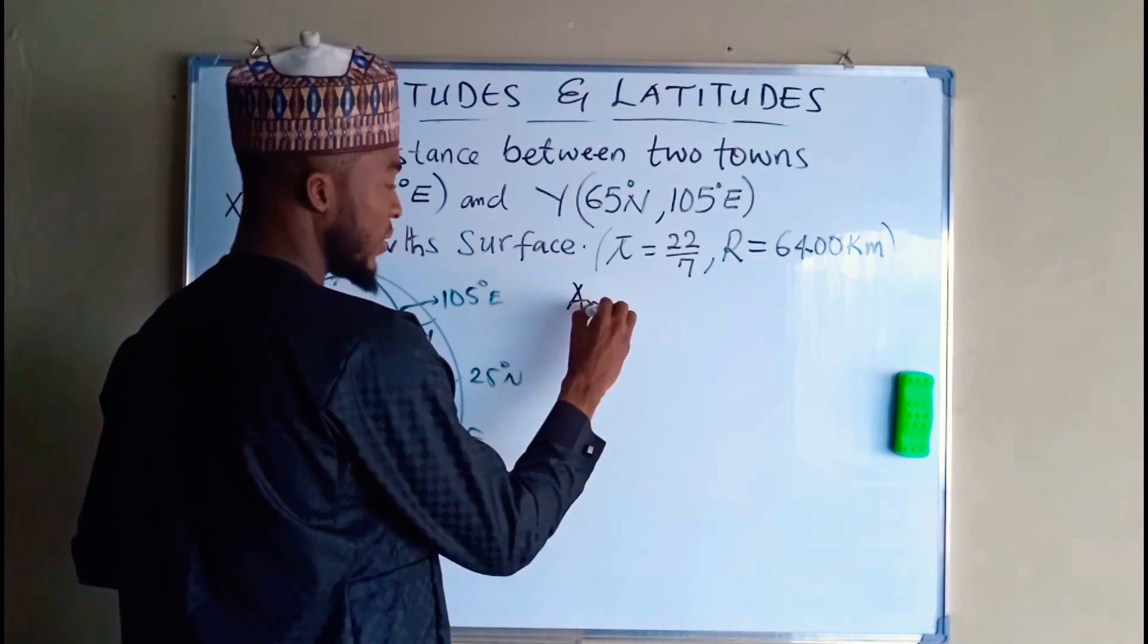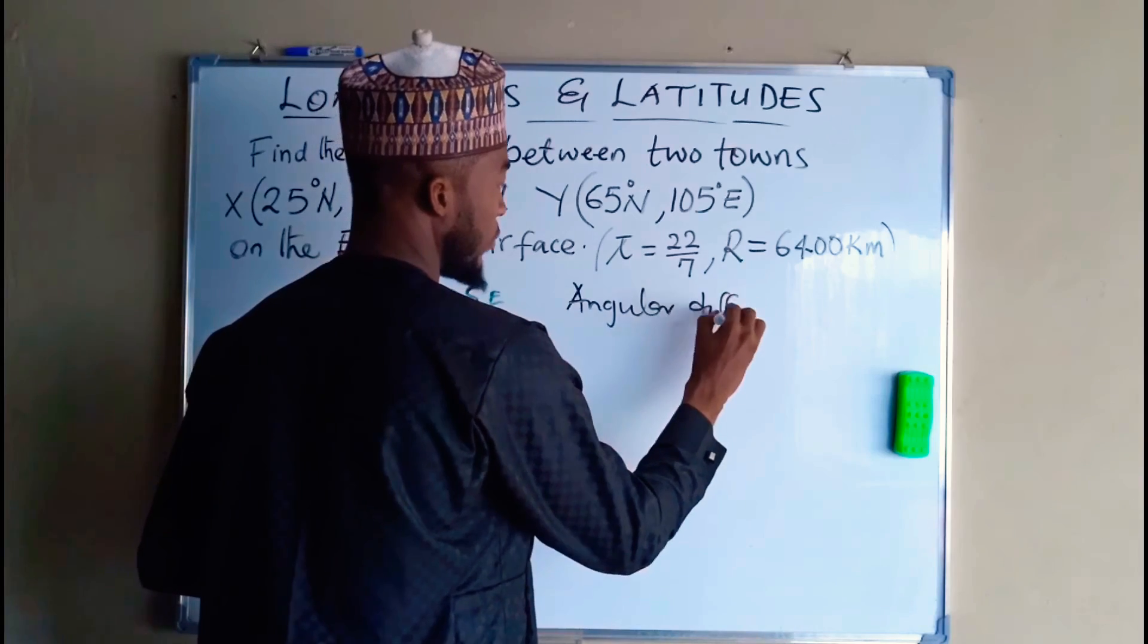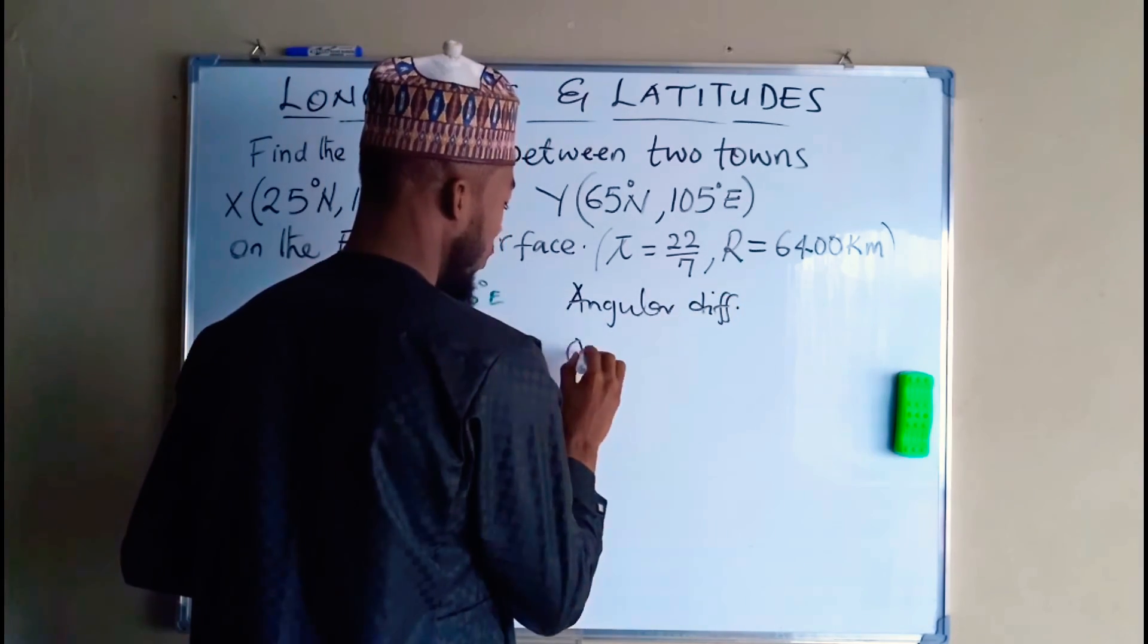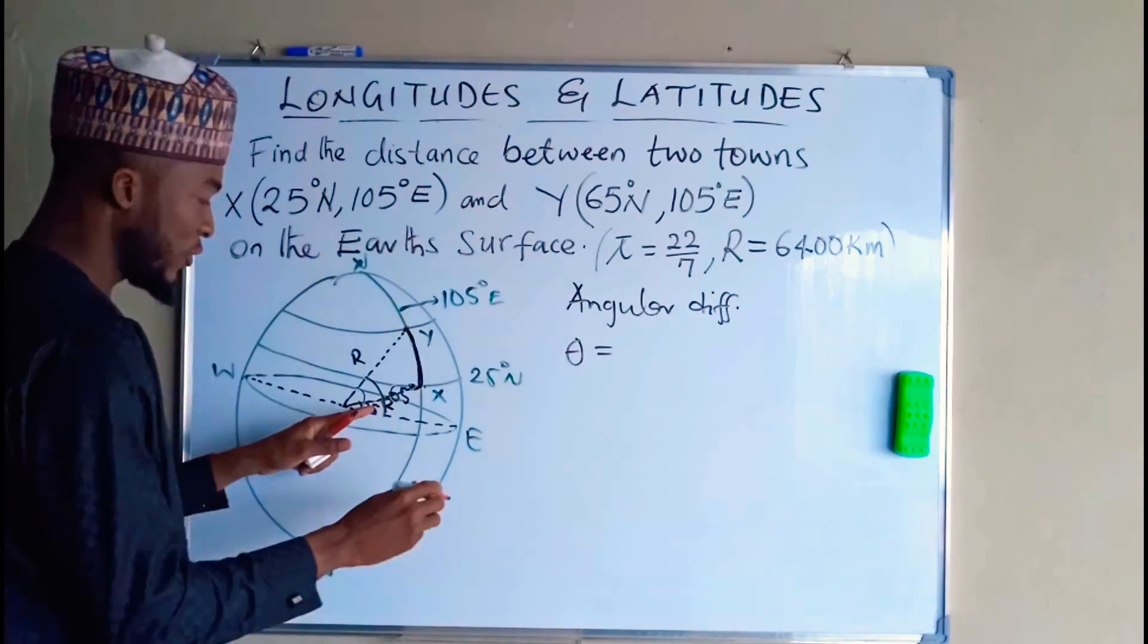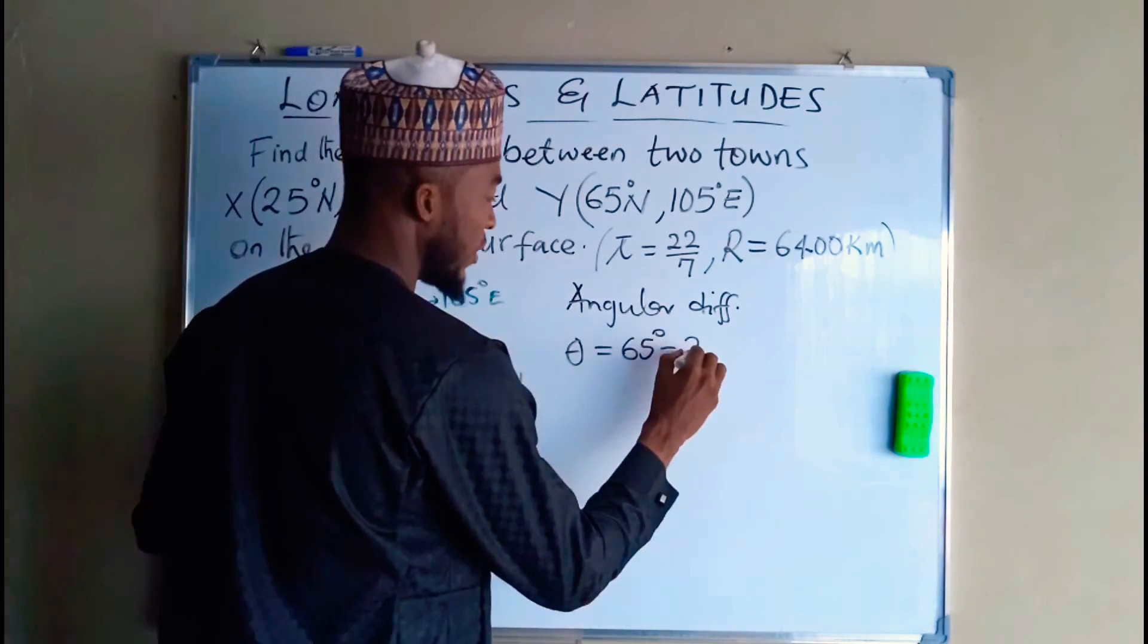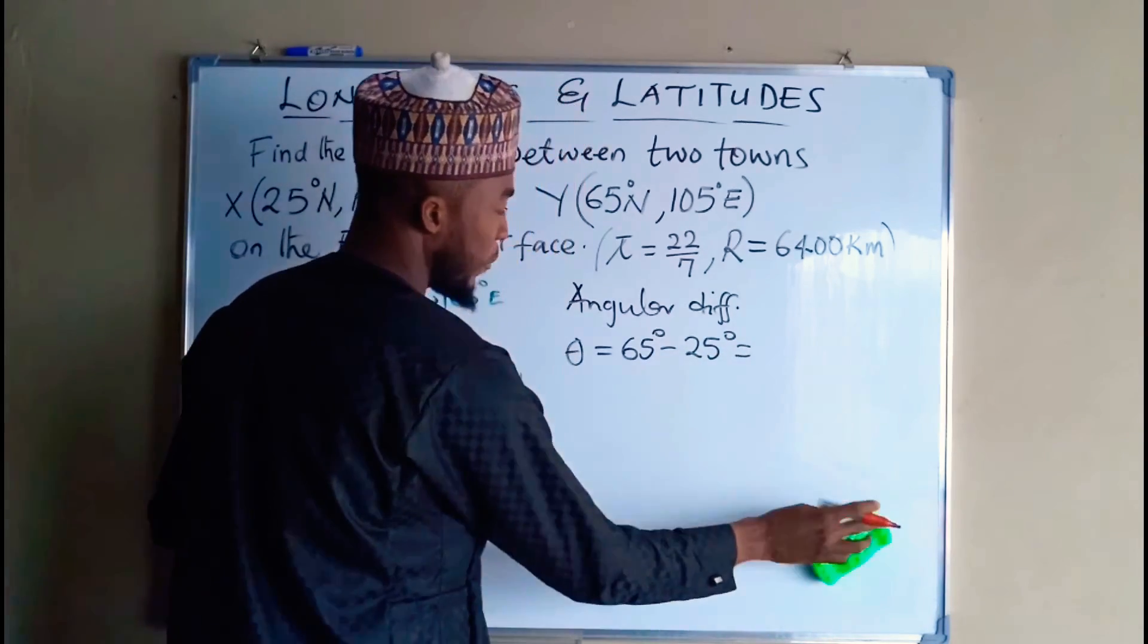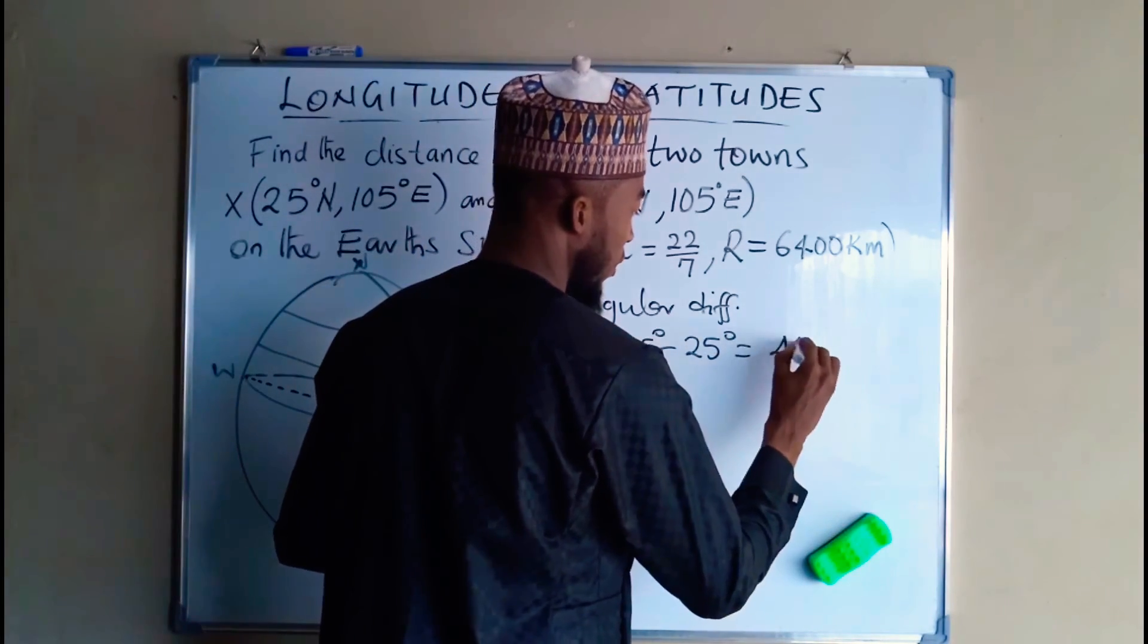Therefore angular difference theta is equal to 65 degrees minus 25 degrees, which is equal to 40 degrees.